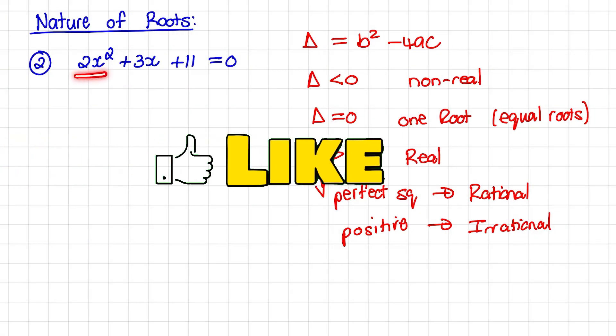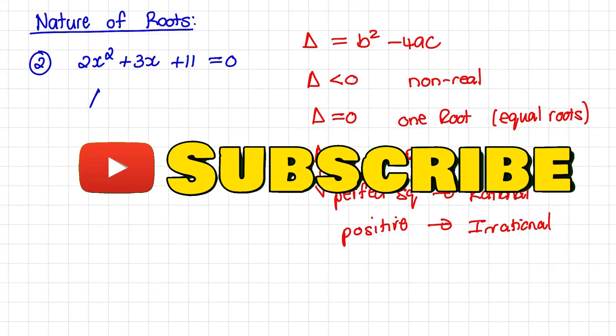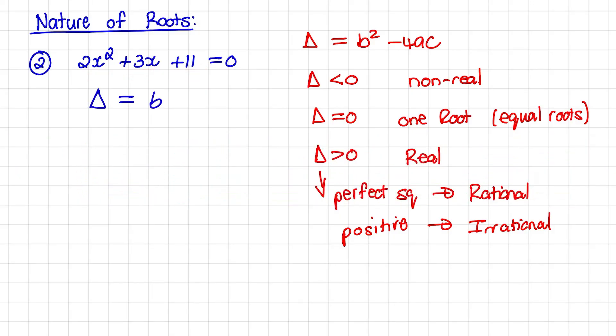In our second example, we have 2x squared plus 3x plus 11 equals 0. So our discriminant is, again, b squared minus 4ac.